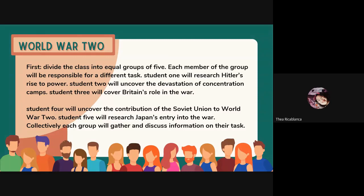Number two will uncover the devastation of concentration camps. Number three will cover Britain's role in the war. Student number four will uncover the contribution of the Soviet Union to World War Two. And student number five will research Japan's entry into the war. Collectively, each group will gather and discuss information on their task and form an expert group with the same topic.